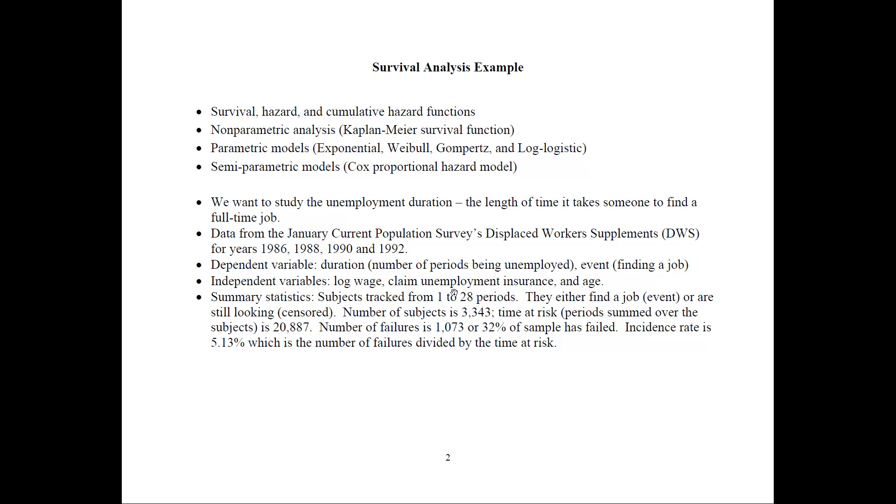So if you sum up the number of periods for each of these subjects, you get that number of 20,000-something. The number of failures is 1,073, or that's 32% of the sample has failed, just dividing this number divided by the 3,000-something. The incidence rate would be 5.13%, which is the number of failures, 1,073, divided by the time at risk, the 20,000 number.